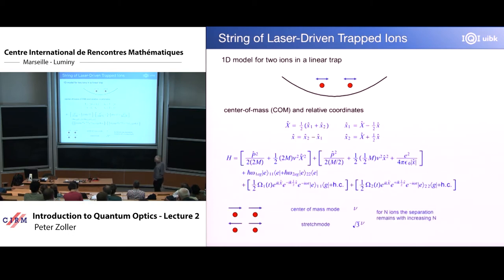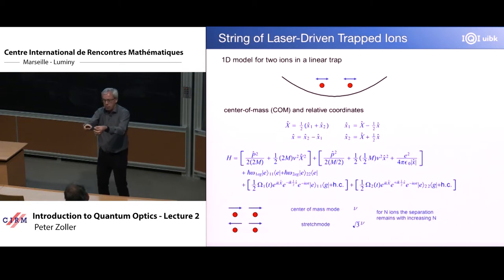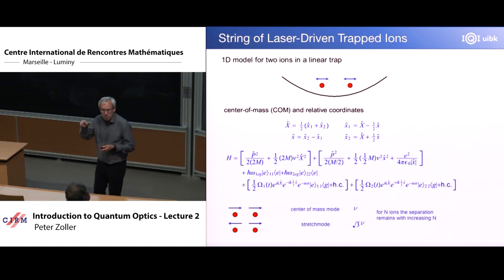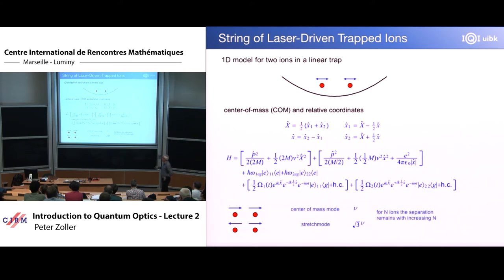The next step is to do a 1D model for two ions in a trap. We rewrite for very small oscillations about these classical equilibrium positions, introduce center of mass and relative coordinates, and identify the corresponding ion modes of the system. In the case of two ions this is very simple: there will be a center of mass mode where the ions go together, and the corresponding frequency is just the bare trap frequency. There will also be a stretch mode where the ions oscillate against each other with a frequency that is square root of three times the trap frequency.